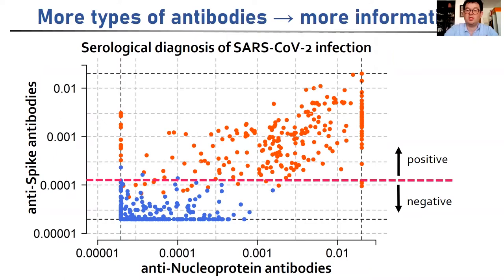Using one antibody, we essentially just draw a cutoff. If you're above that, you're positive. If you're below it, you're negative. So this is classification with spike.